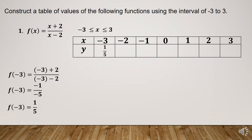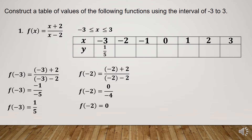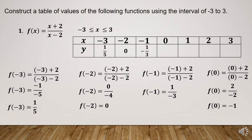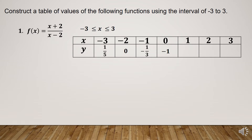If x is equal to negative 2, substitute and simplify: f of negative 2 is equal to 0. If x is equal to negative 1, substitute and simplify: f of negative 1 is equal to negative 1 over 3. If x is equal to 0, substitute and simplify: f of 0 is equal to negative 1. If x is equal to 1, substitute and simplify: f of 1 is equal to negative 3.